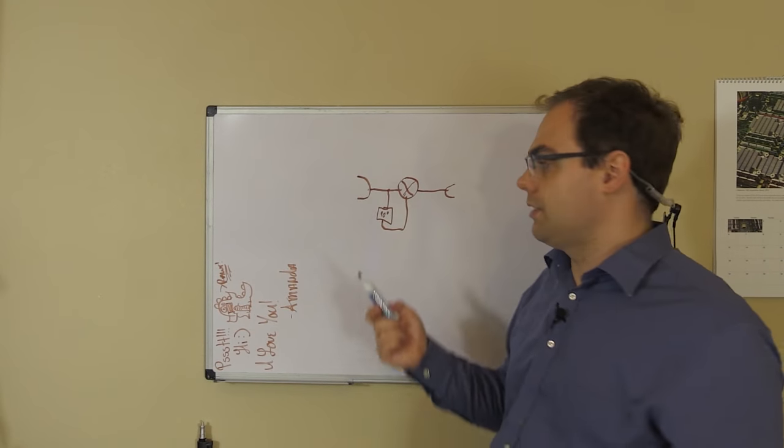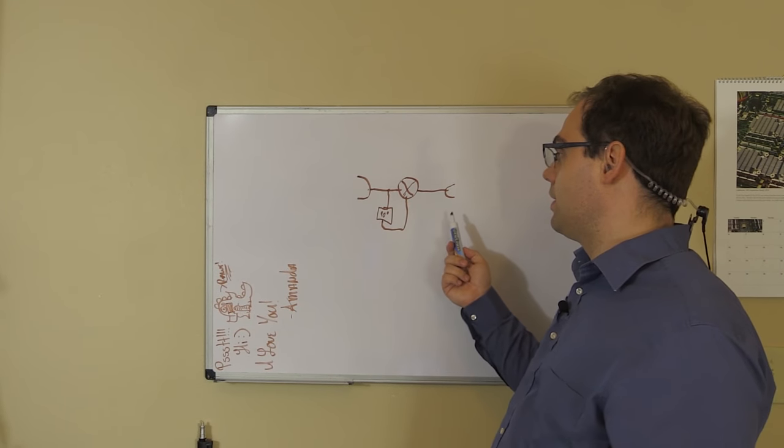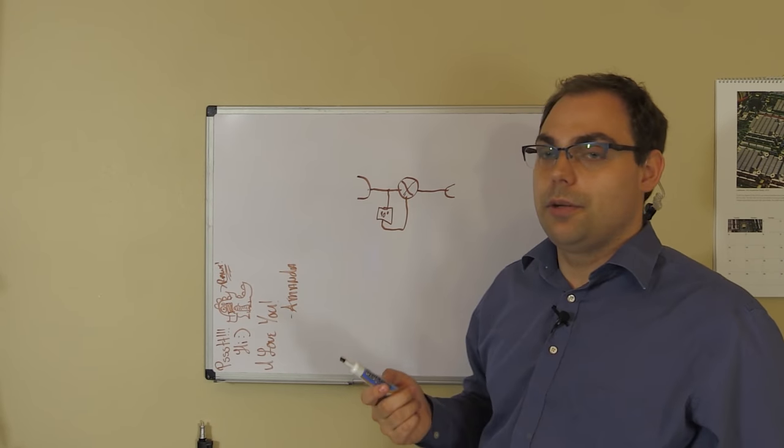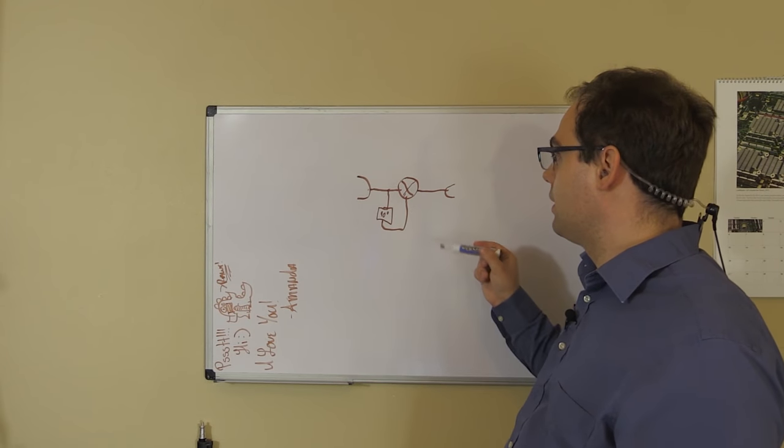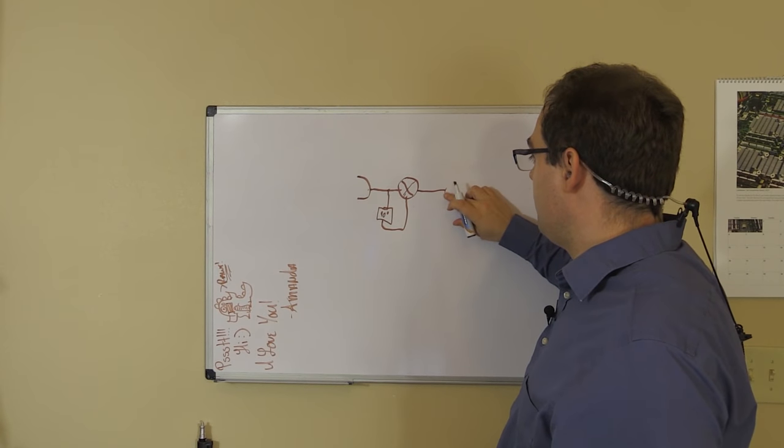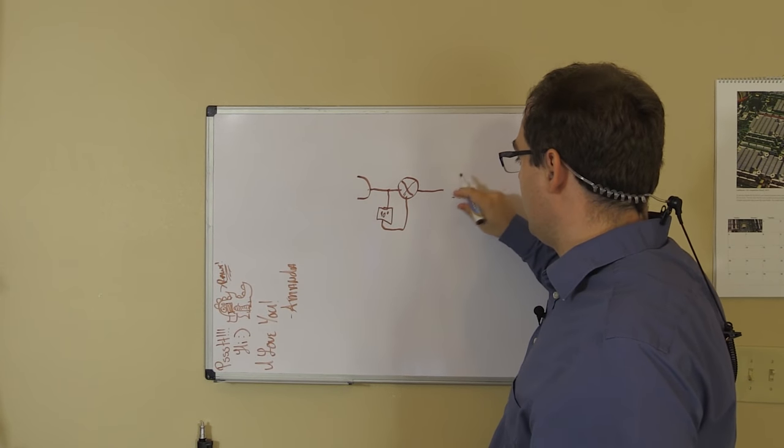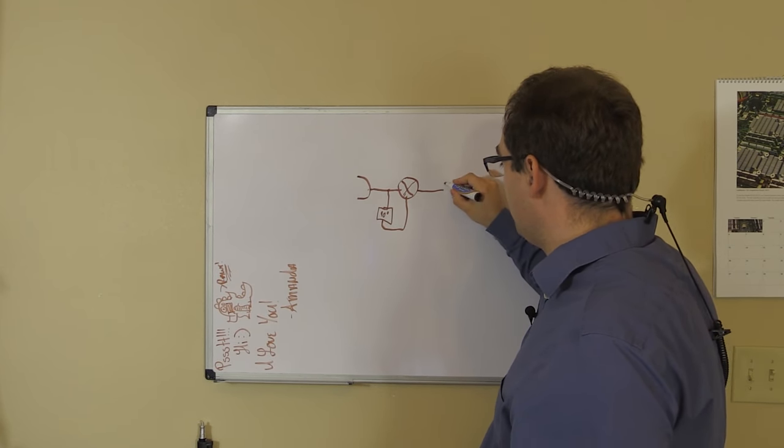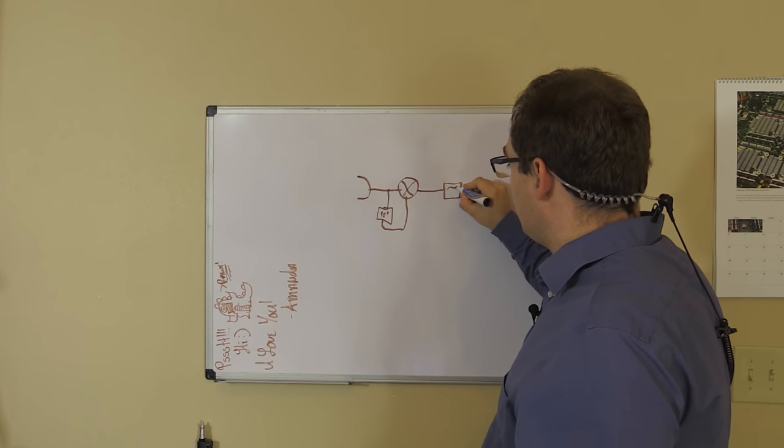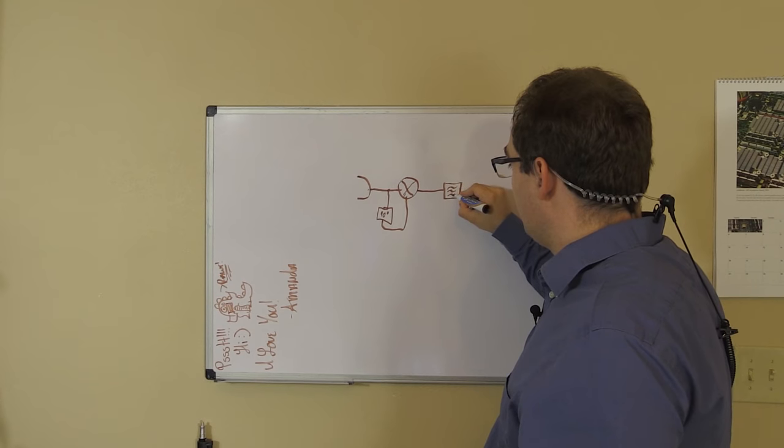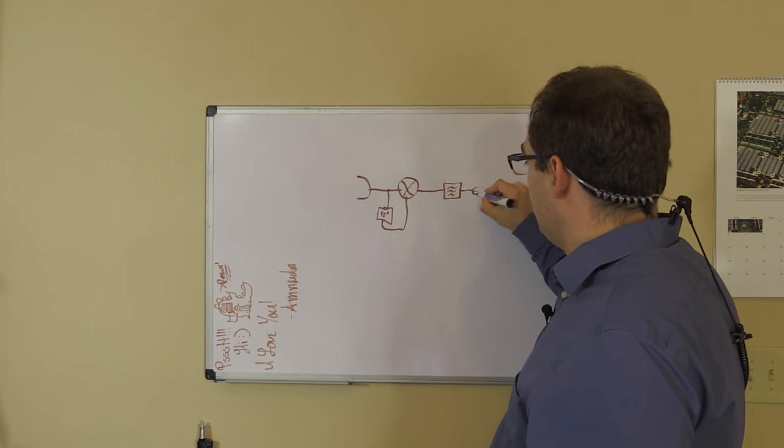If you mix a signal with itself, it comes out at twice the frequency. But since there are other harmonics present, you need to filter afterwards. Especially with this mixer method, you're going to get a lot of intermodulation. That's one reason why this version isn't used very often. Here's your filter, and here's the output.